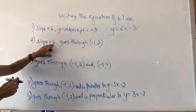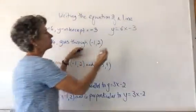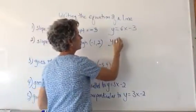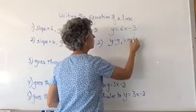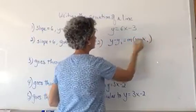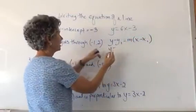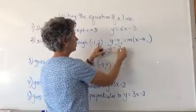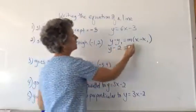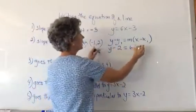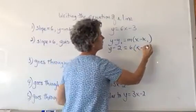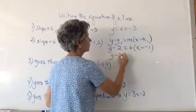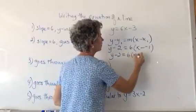If you know the slope and a point that it goes through, you want to use point-slope form, which is y minus y1 equals m times x minus x1. So that would give us y minus 2 (our y-coordinate is 2) equals 6 (the slope) times x minus negative 1. So we have y minus 2 equals 6 times x plus 1.